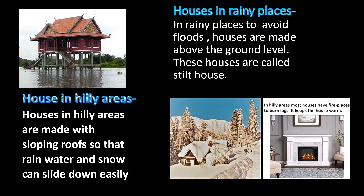Houses in rainy places: in places where it rains a lot, houses are built a few feet above the ground on a raised platform with a sloping roof. These houses are called stilt houses.